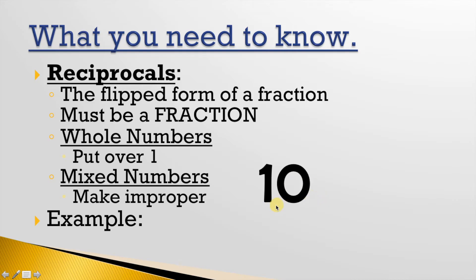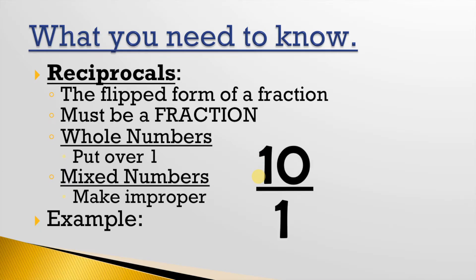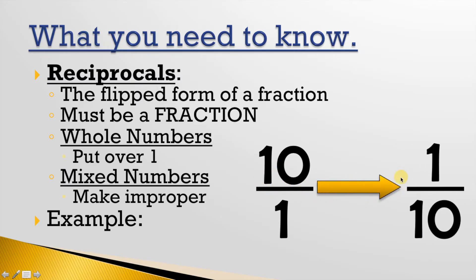How about 10? Well, this is a whole number, and whenever we have a whole number, in order to find the reciprocal, you've got to put it over 1. So I'll put 10 over 1, and now I'll just flip that — that'll give me 1 over 10. So the reciprocal of 10 is 1 over 10.